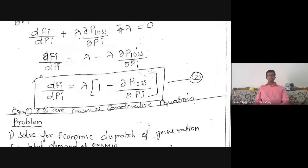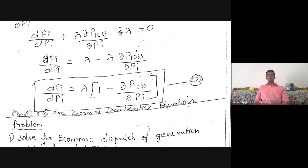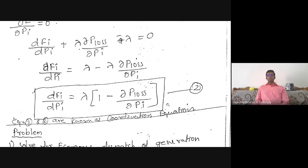The final formulation for economic load dispatch of N thermal generating units with losses is: dFi/dPi = λ·(1 − ∂P_loss/∂Pi). In the previous case without losses, it was simply dFi/dPi = λ. With losses, the additional term (1 − ∂P_loss/∂Pi) is included. Equations 1 and 2 together are known as the coordination equations.